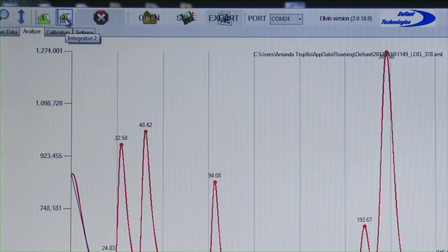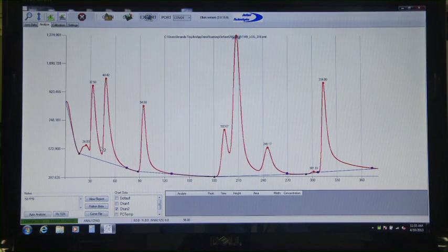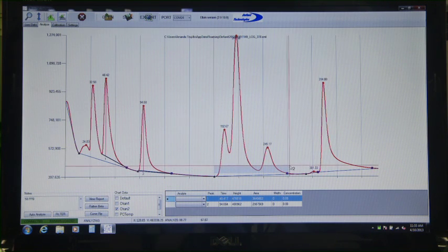Elvin's Integrator 2 is used to determine the area under the analyte peak, the height of the peak, and the time the peak reaches the highest point, which is the retention time. Integrate each peak that corresponds to a calibration analyte. Multiple peaks can be grouped for integration.